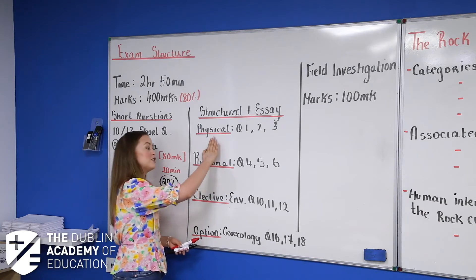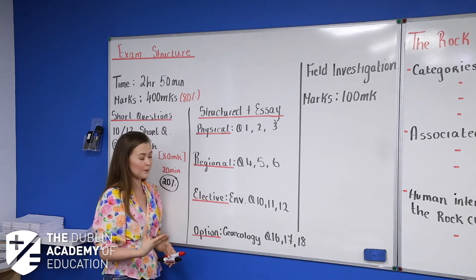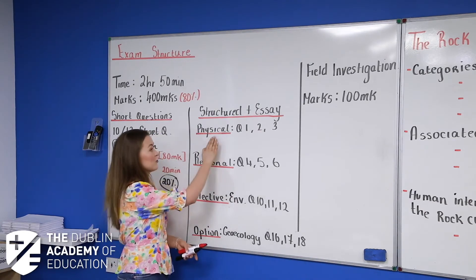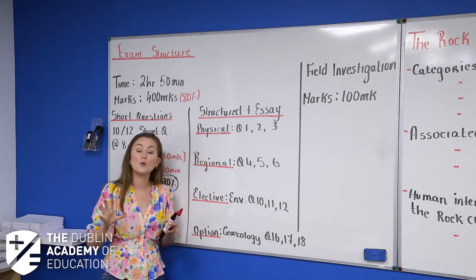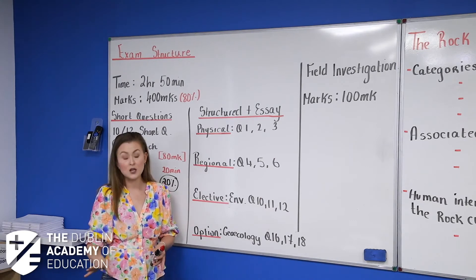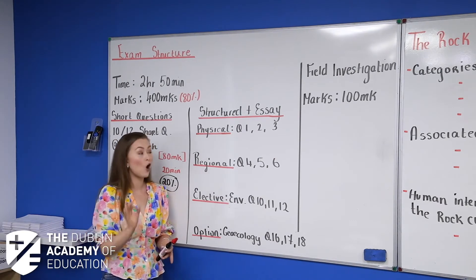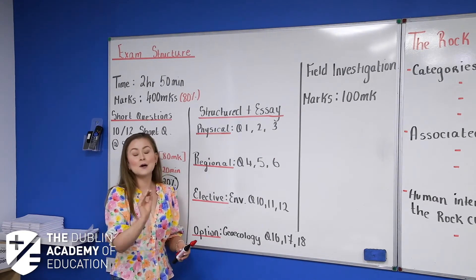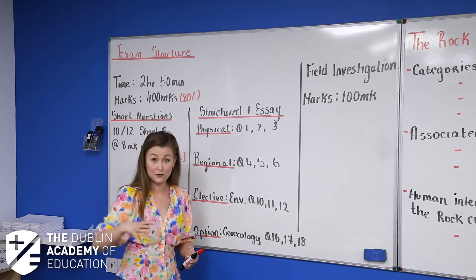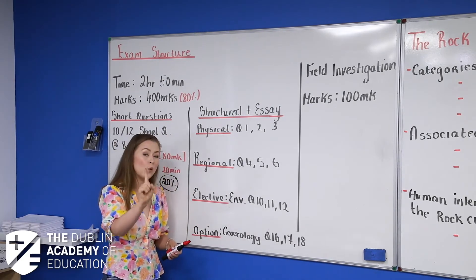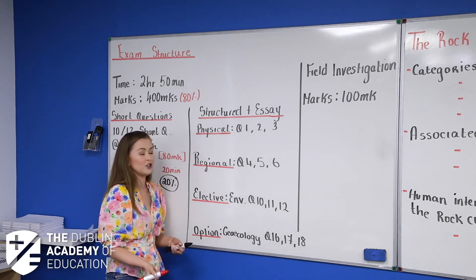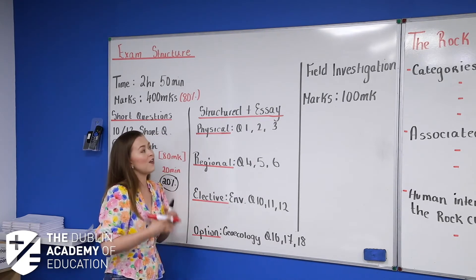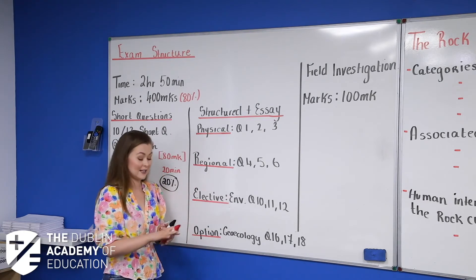Your first two, your physical and region, are often referred to as your core. So when you get into that section, your first three questions, question one, two, and three, are always physical geography questions. Now what you have to do out of each or for one, two, and three is you have to choose one question and one question only and answer the entirety of that question.